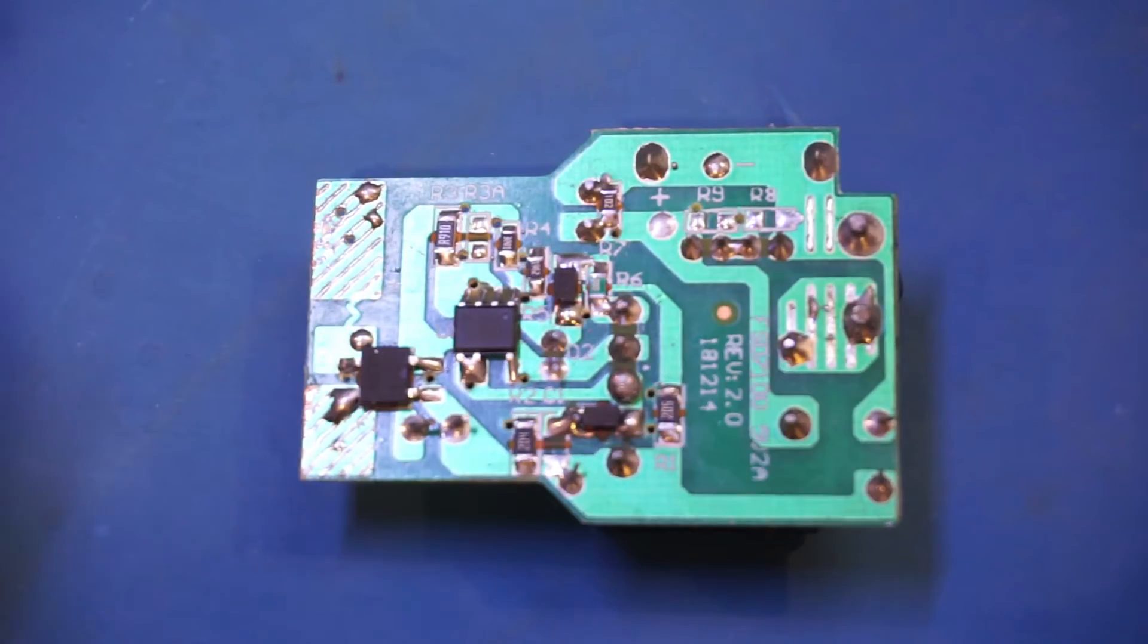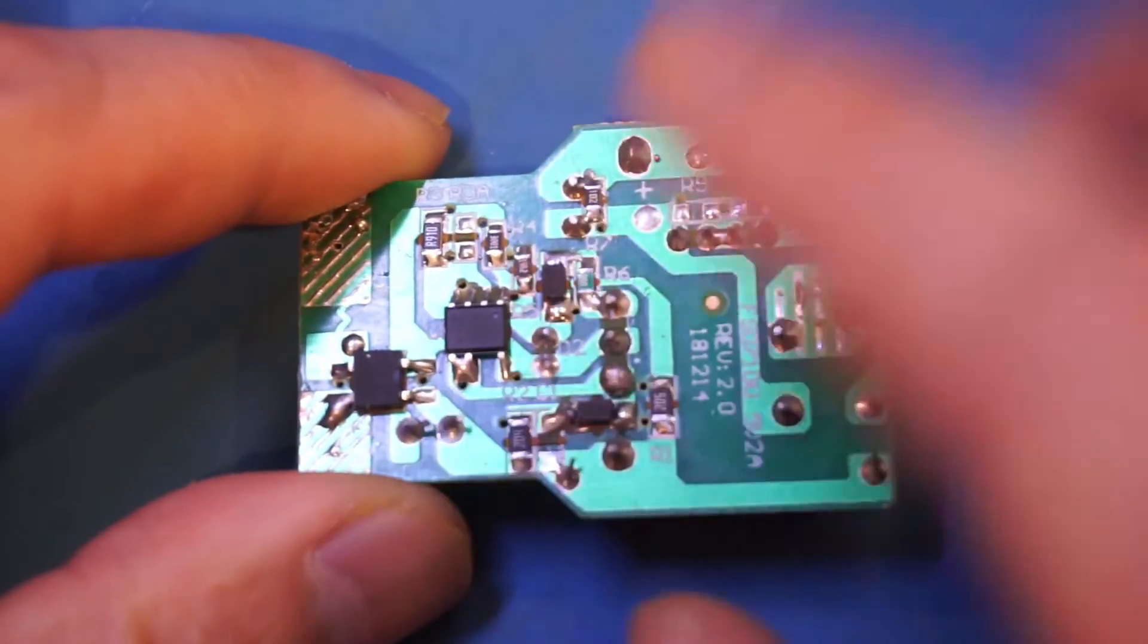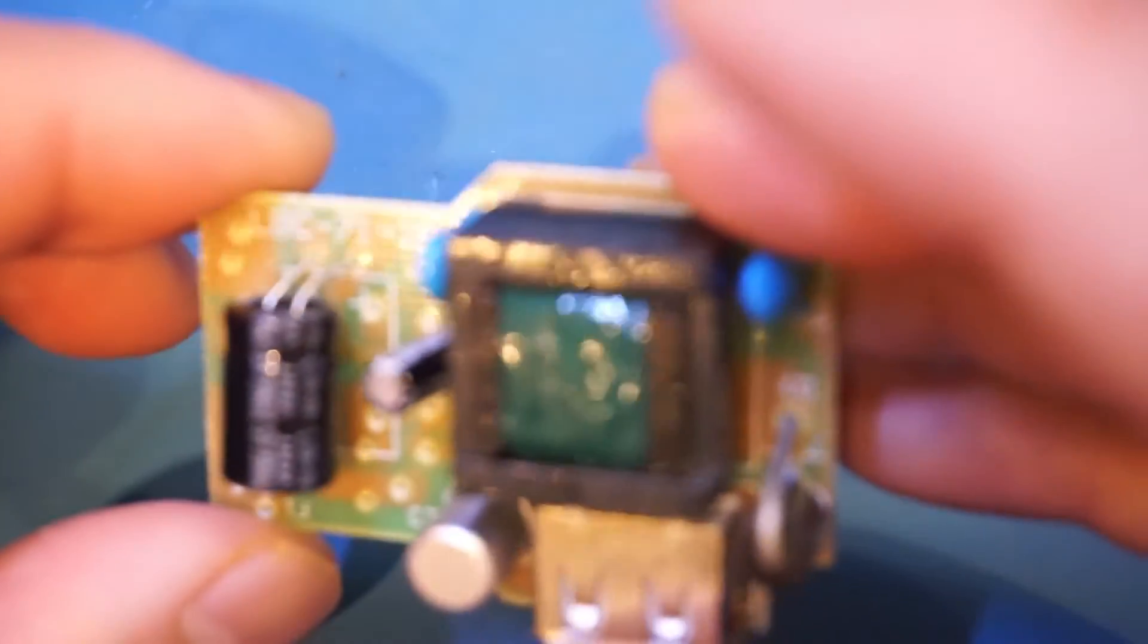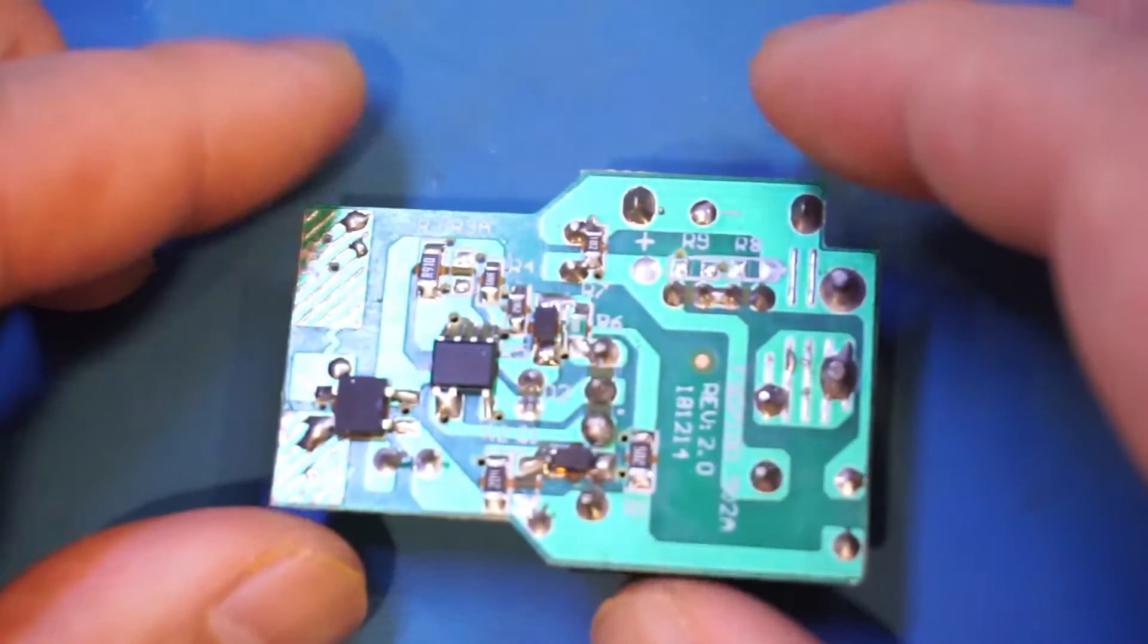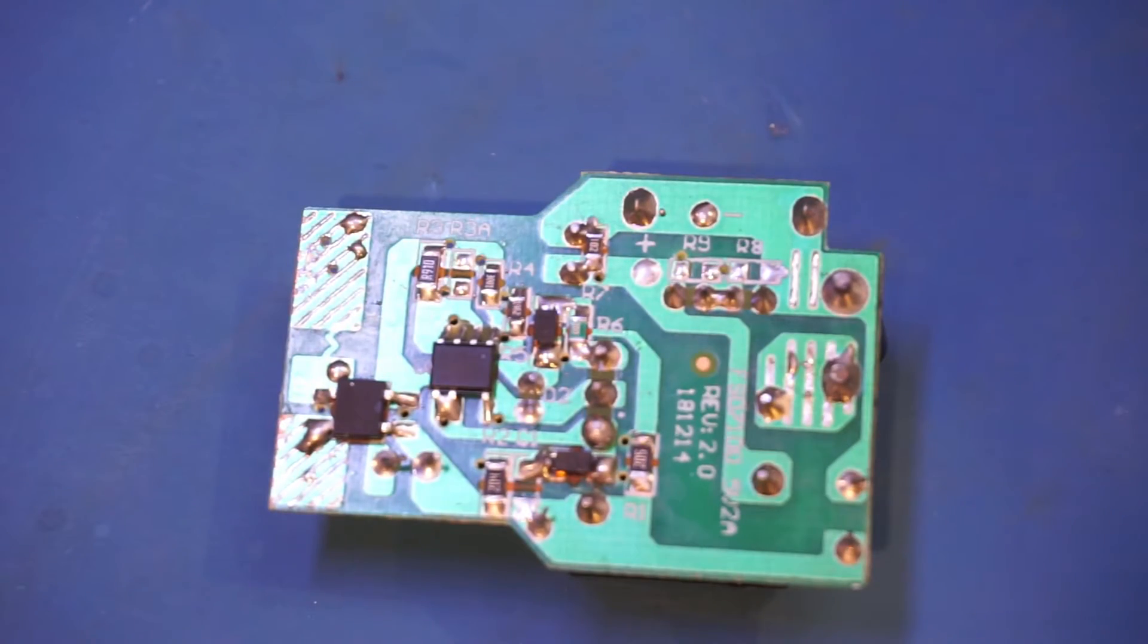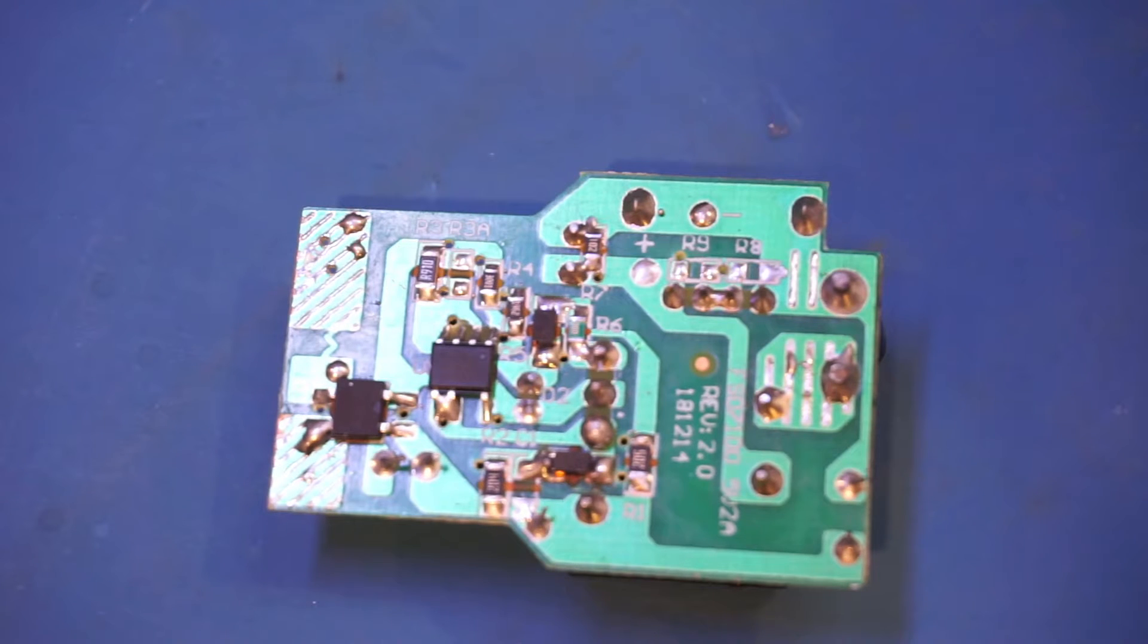By the look of it, there seems to be just that one 8-pin chip that does all the work. Now, there doesn't seem to be any optocouplers between the primary and the secondary of the windings here. So, I assume this is a design purely relying on the feedback through either the primary or a separate winding of the flyback transformer.